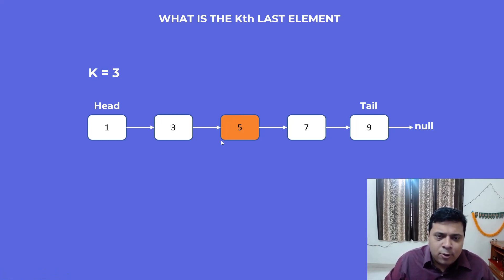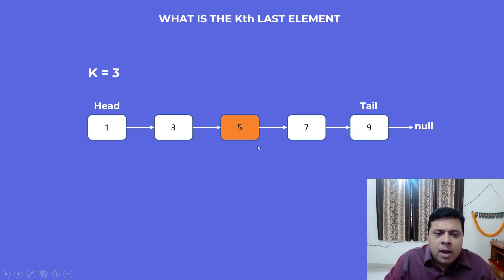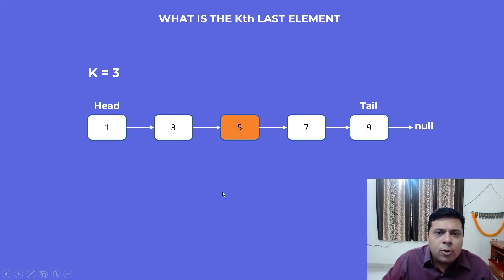The main thing the interviewer is looking for when asking this question is: can we do this in a single pass? Otherwise it is pretty easy — you can count the number of elements in the linked list, then traverse with an index and stop at the particular position you want. However, to do it in a single pass that approach doesn't work, because we would be iterating through the list potentially two times. The key challenge is doing it in one pass.